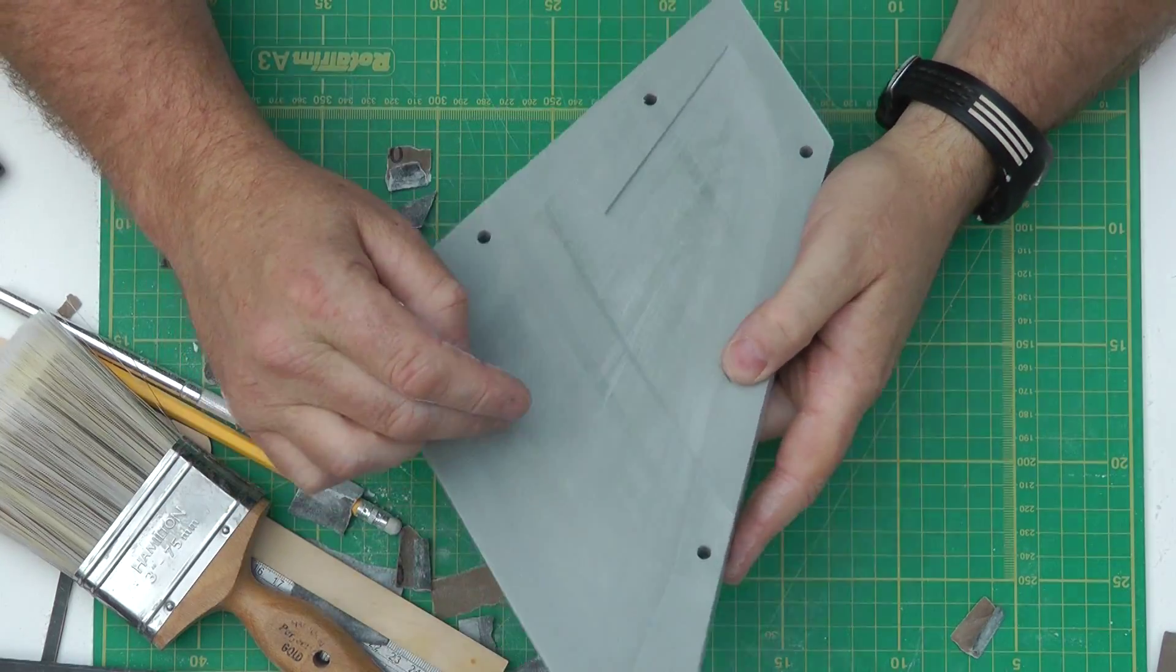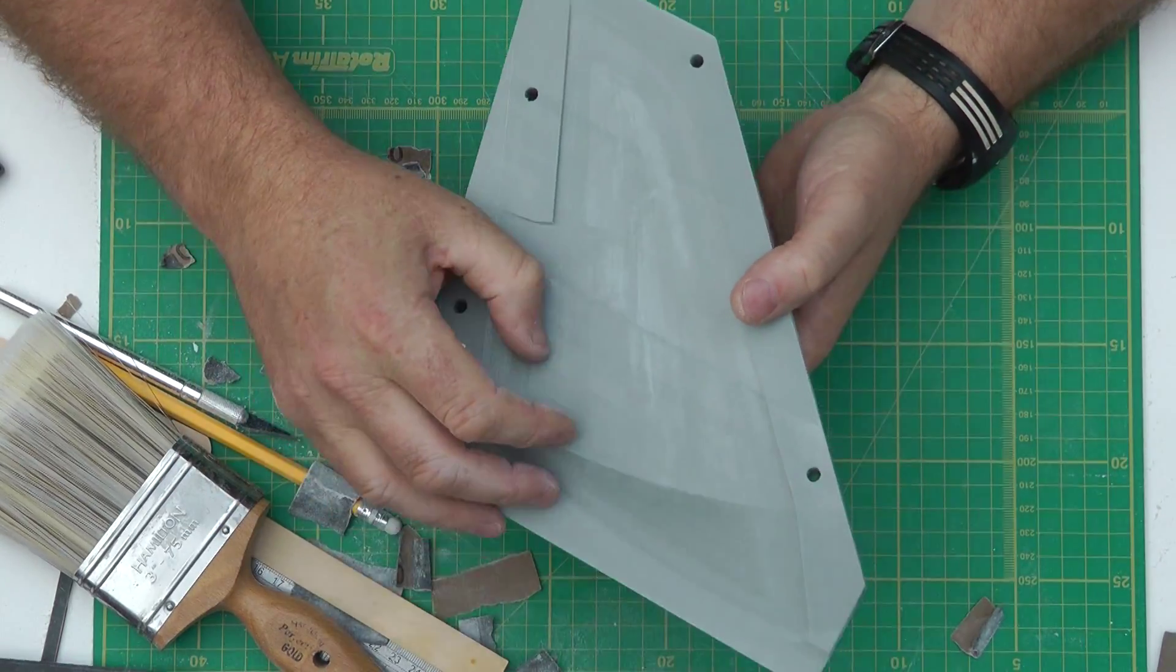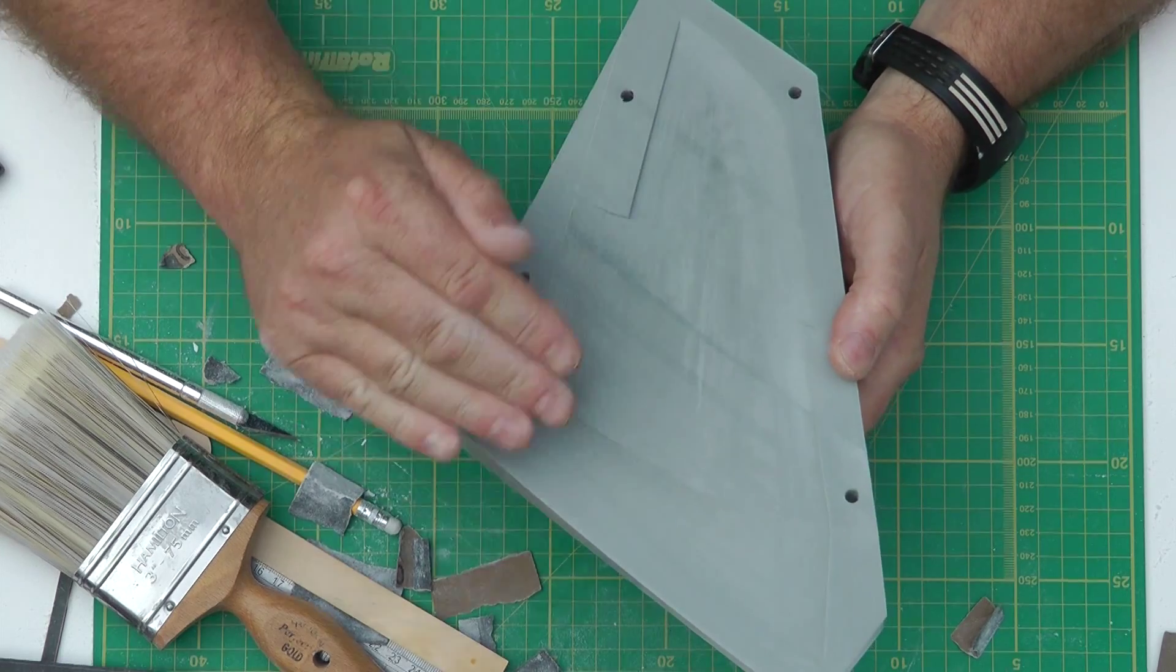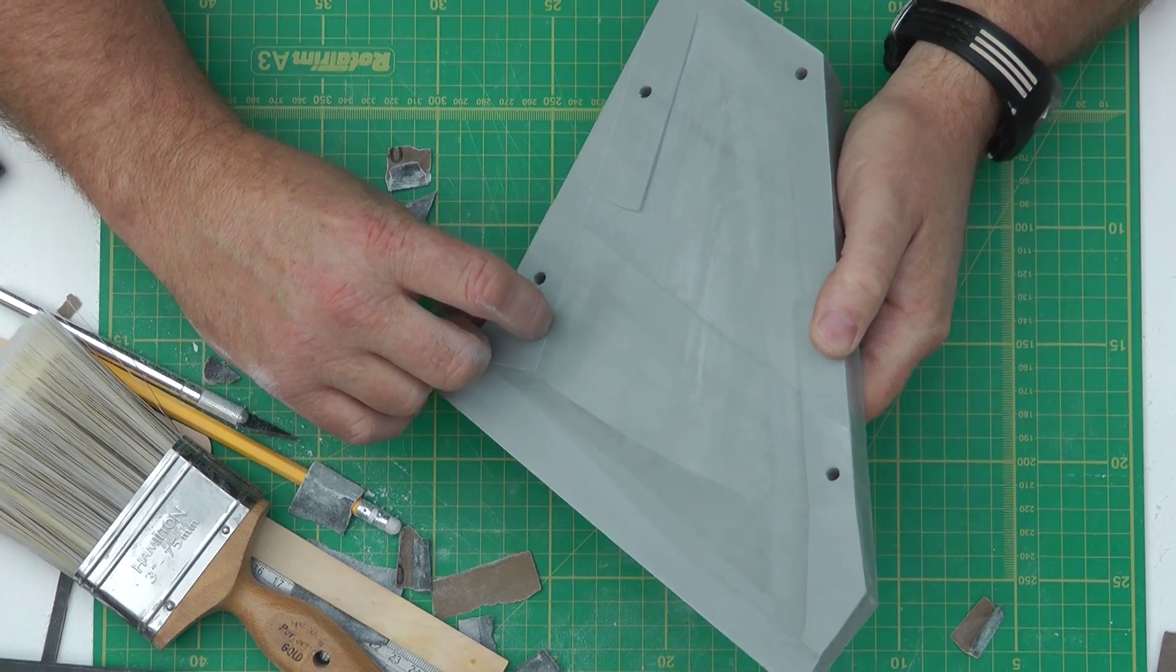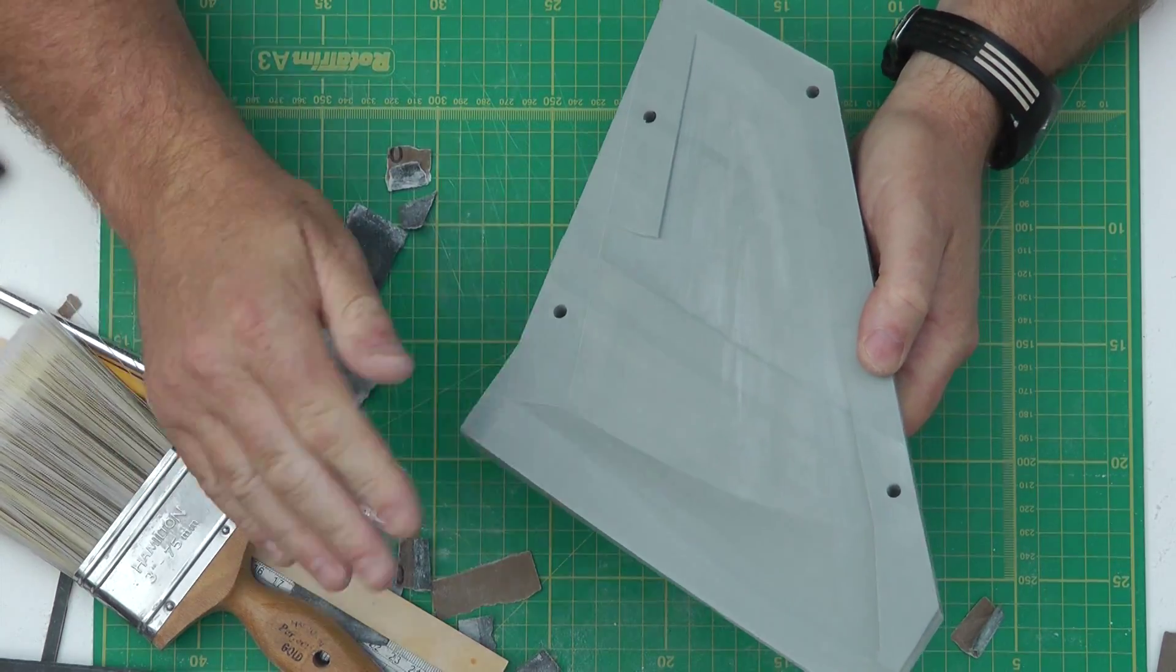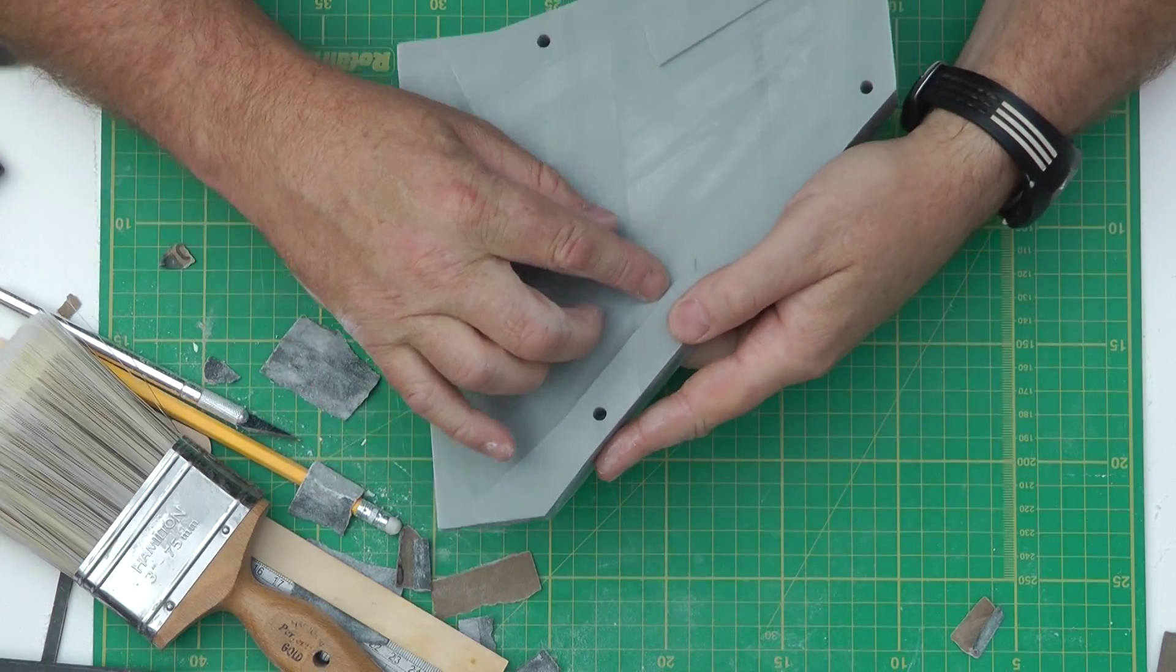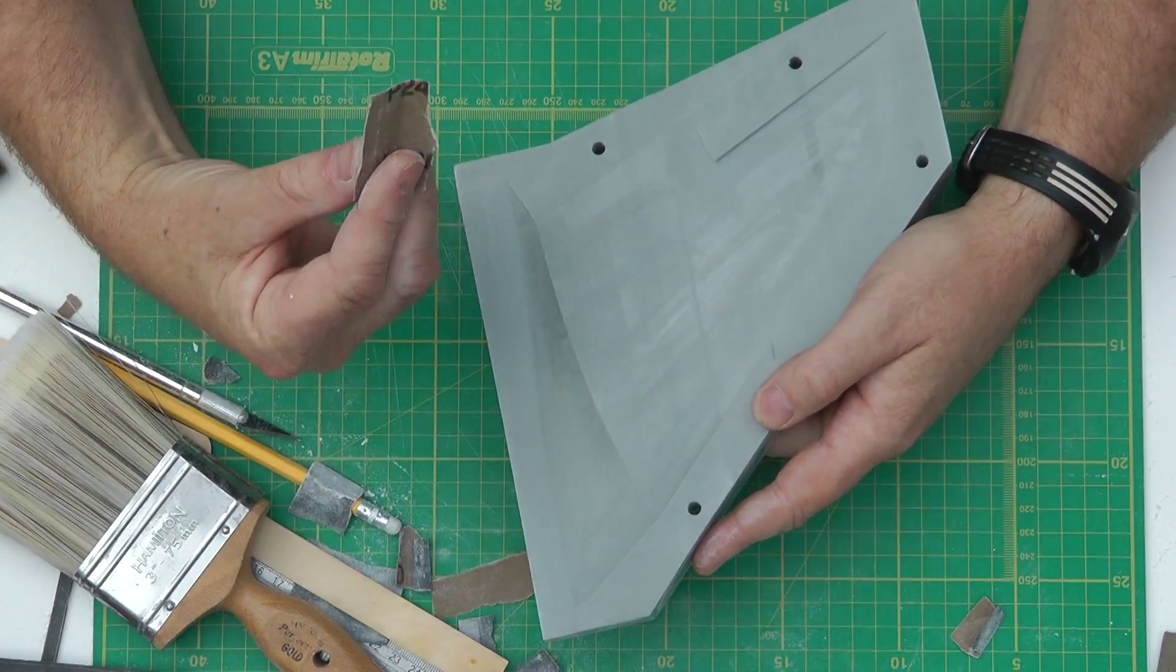The hardest part I've found is actually just sanding out the ringing. The actual print layer lines, they sound off quite uniformly and they come off quite quickly. It's these ringing lines, the vertical ringing lines seem to be deeper. So you've got peaks and troughs that are higher than actual layer height lines. So that's what's taking the time with this first pass with 240 sandpaper.